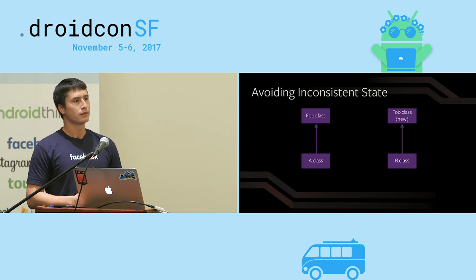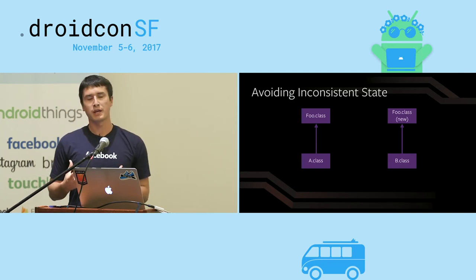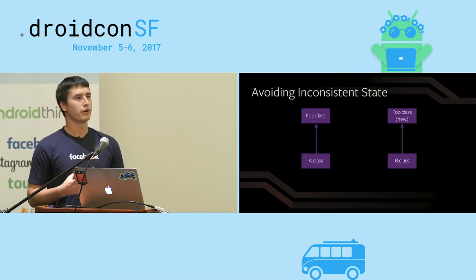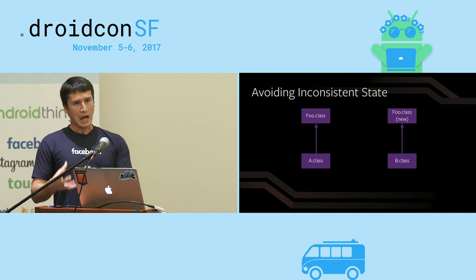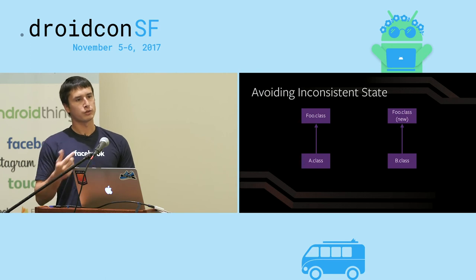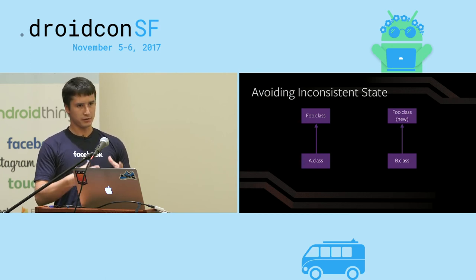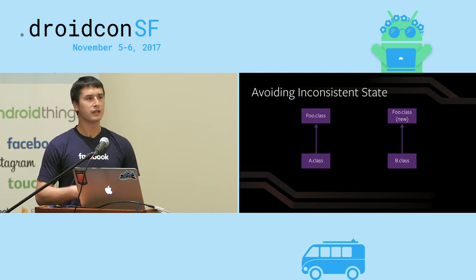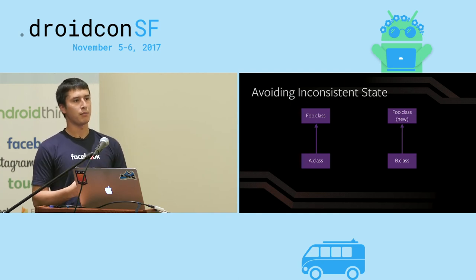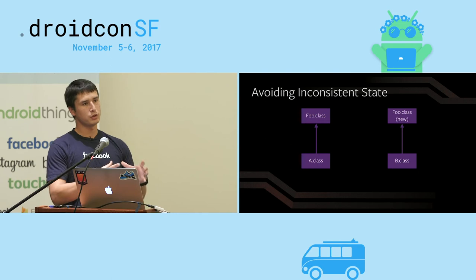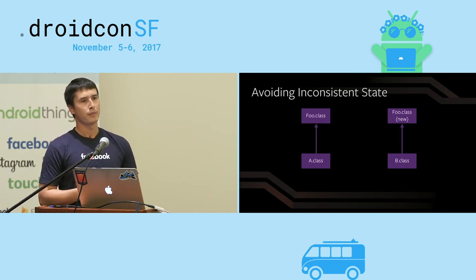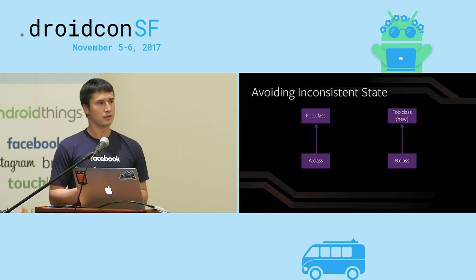We fix this by making sure hot swapping is somewhat of an atomic operation — that as you hot swap code, all the classes that hold strong references to that piece of code also come along with it. The easiest way to do that is to bundle your app into modules — individual chunks of code where you have strong references between classes within that chunk, but all incoming references to that code are dynamic lookups.